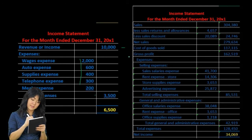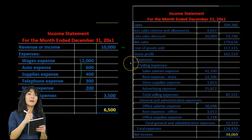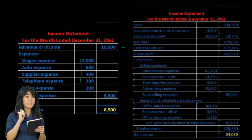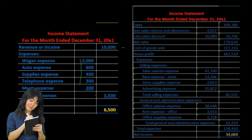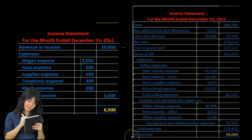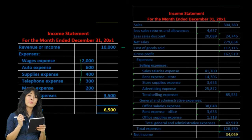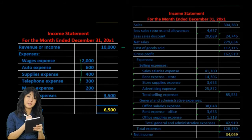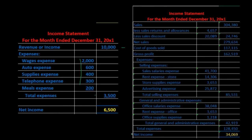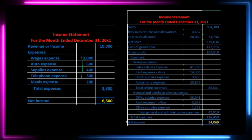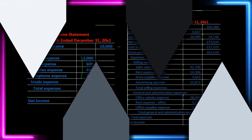Then we can categorize the expenses — as selling expenses and general and administrative expenses — rather than just listing all other operating expenses. From there we get down to the net income number. In essence, it's the same calculation: revenue minus expenses, but we're breaking out the categories of revenue and expenses. This format is often used for manufacturing companies or companies that have inventory, such as a merchandising type company.